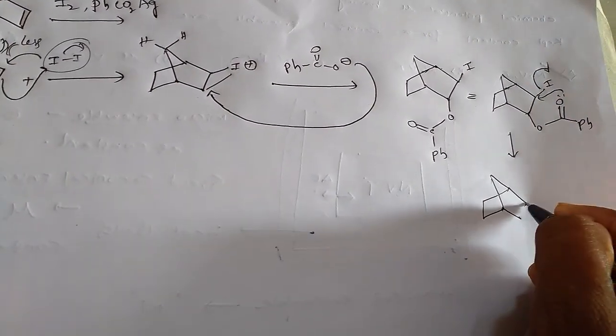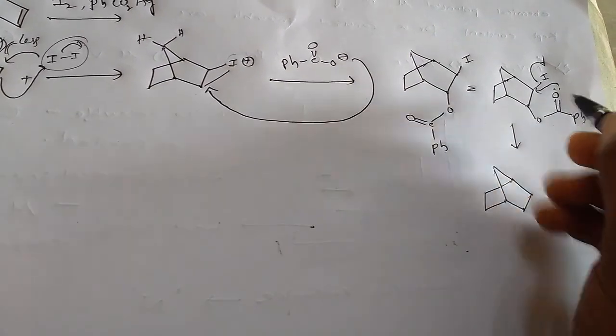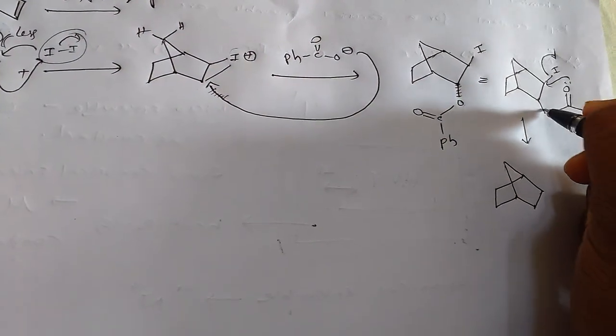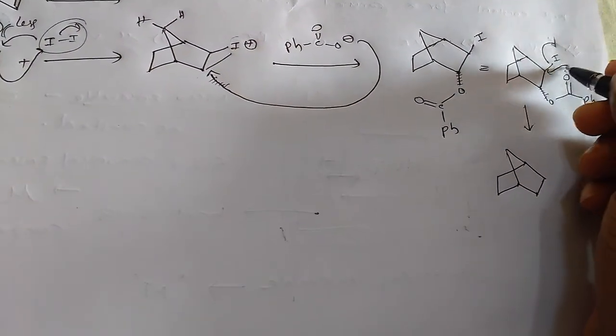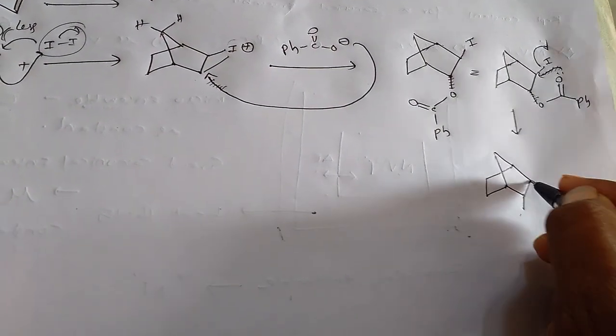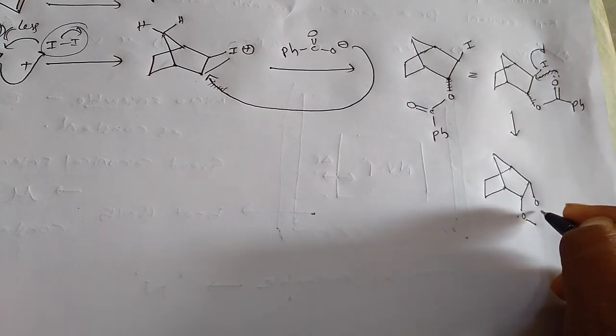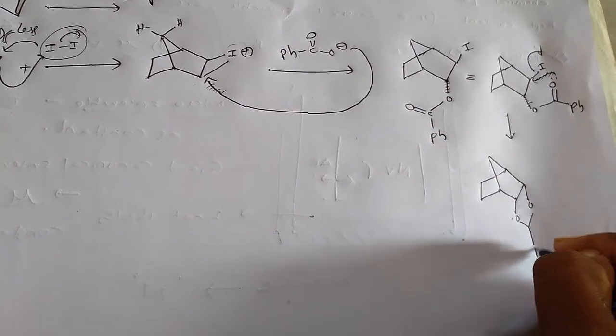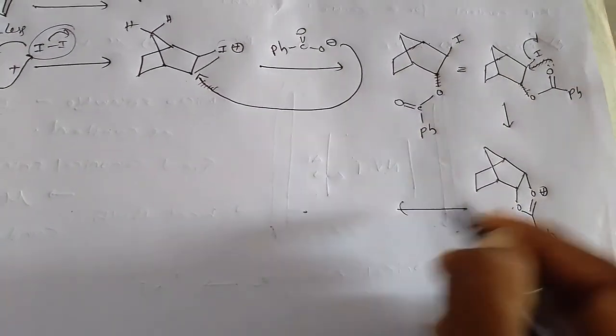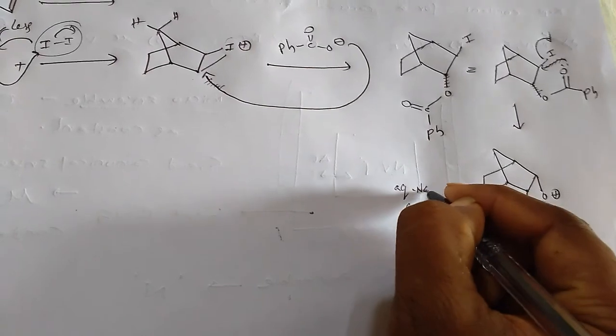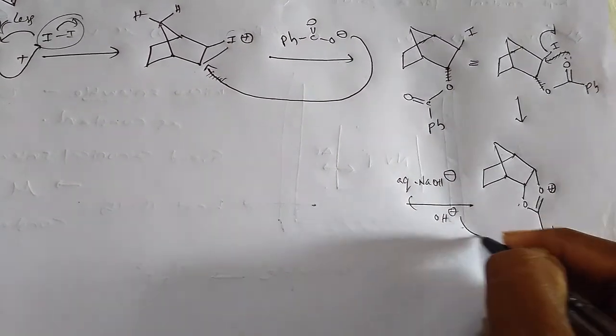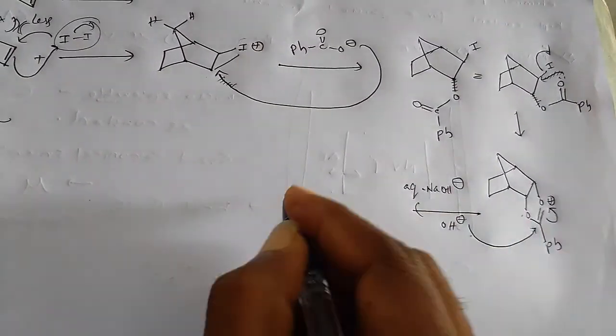Then the lone pair on oxygen attacks here and iodine gets eliminated. So from that, you know, the acetate is from below side, that means it is also from below. So here is positive charge, and then in aqueous NaOH, OH minus attacks here.